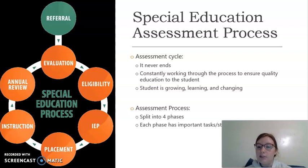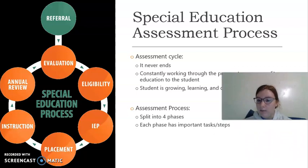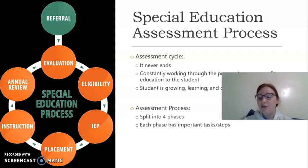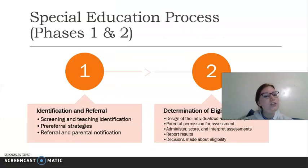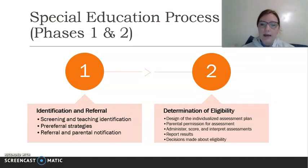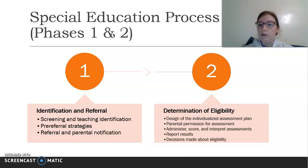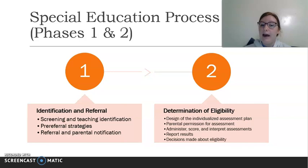The assessment process is split into four phases, each with important tasks or steps. It's very important that you complete each step, as you don't want to skip any — you want to make sure you're getting the student the best quality help possible. Phase one is identification and referral, which includes screening and teacher identification. This is looking at a student who might need some extra support, doing a little bit of screening, providing interventions and modifications, reviewing your own teaching, trying pre-referral strategies, and then referral and parental notification.